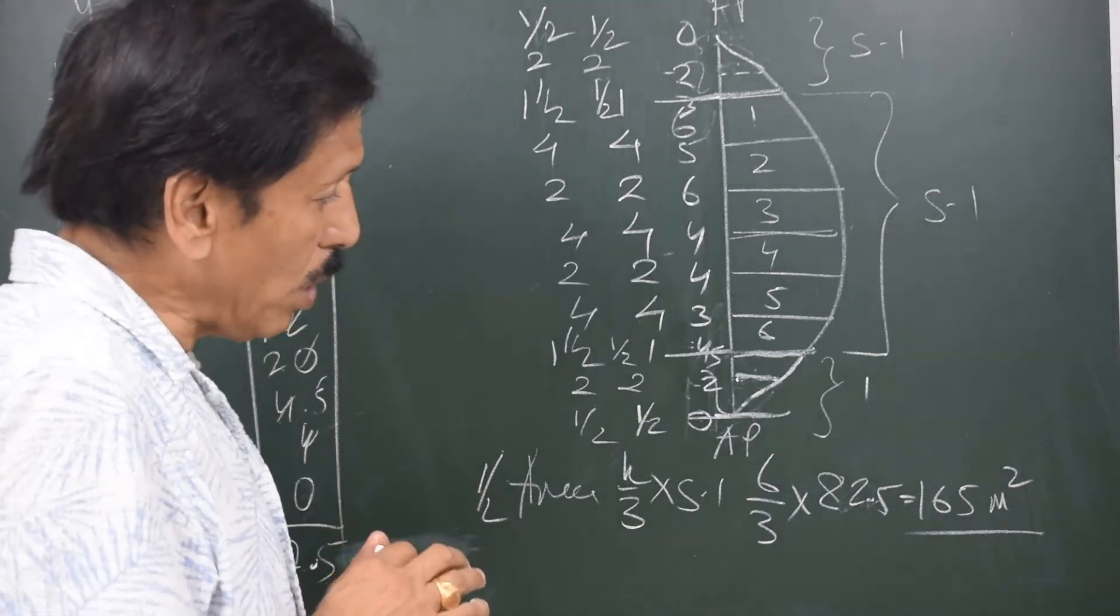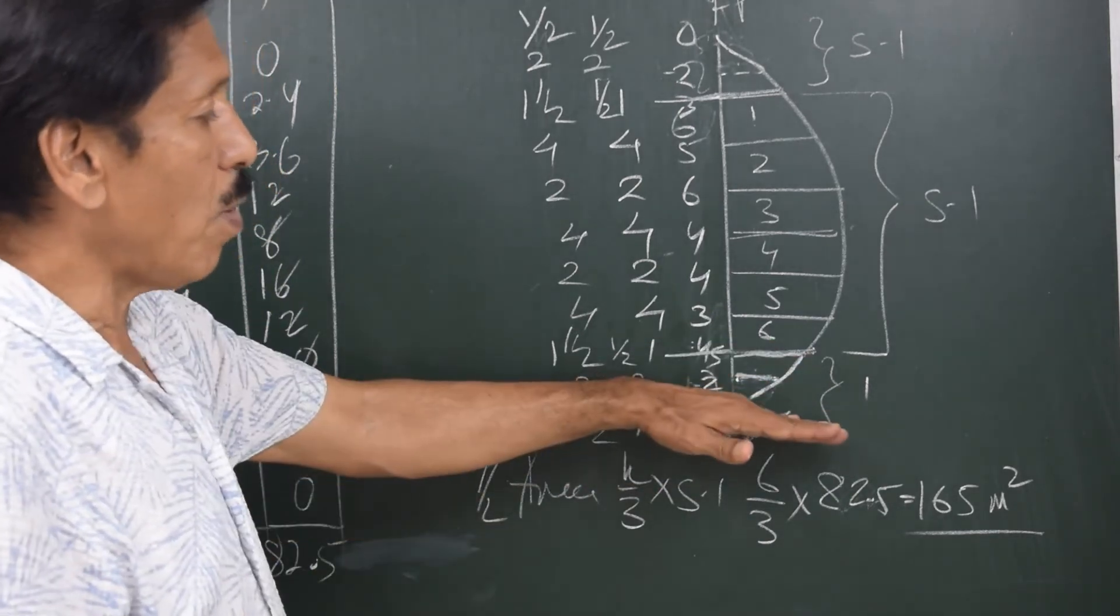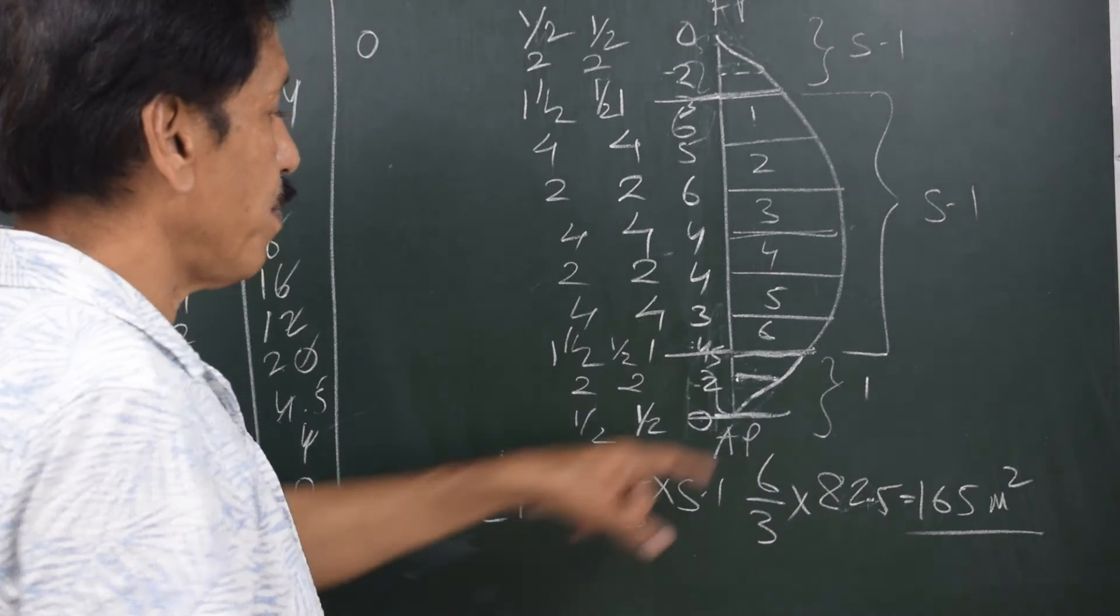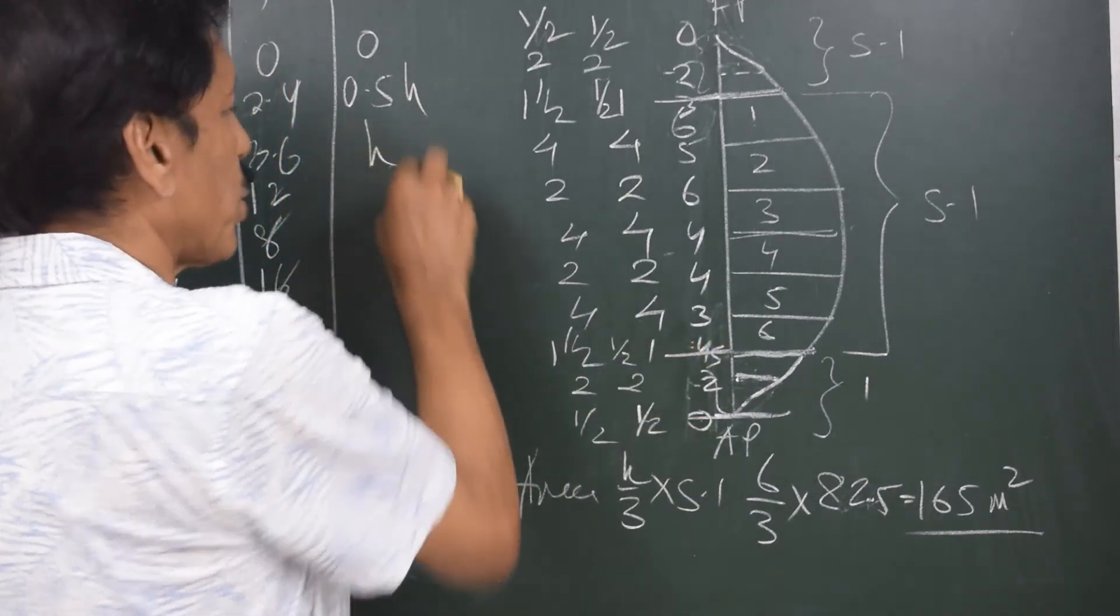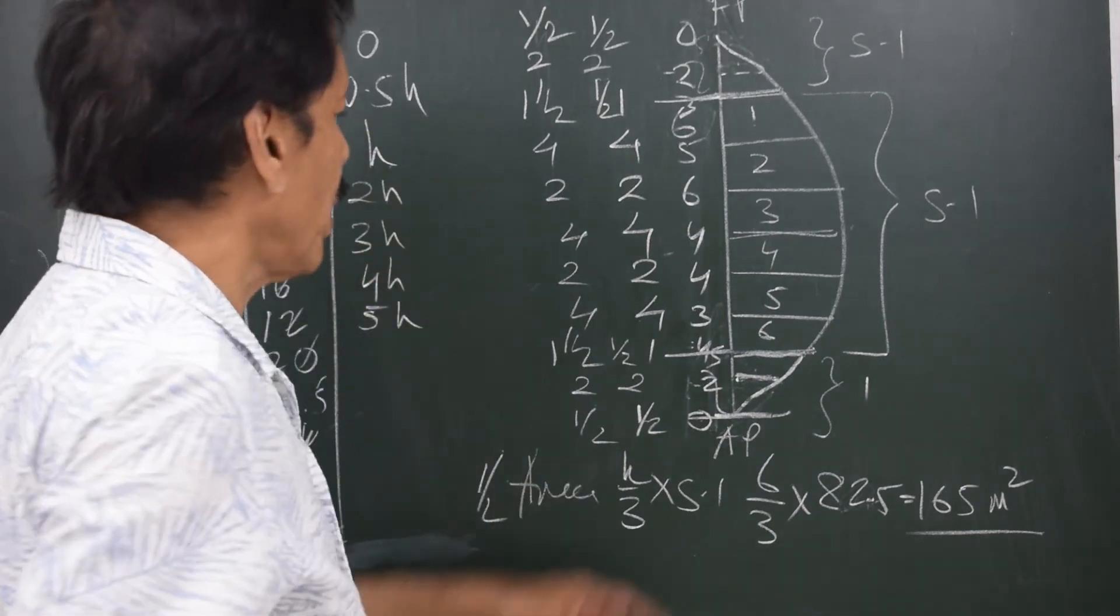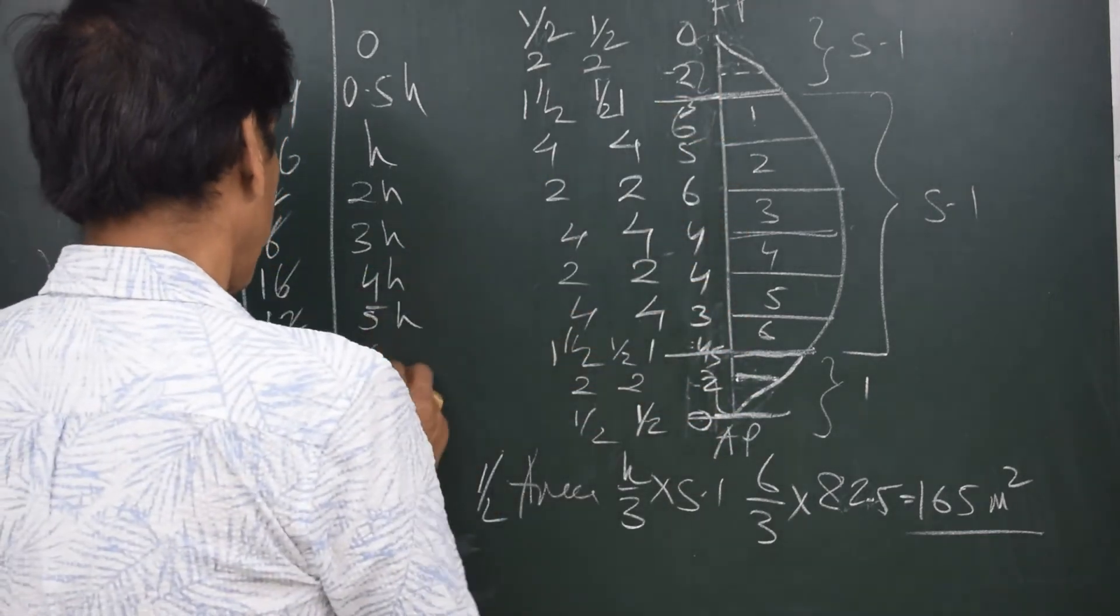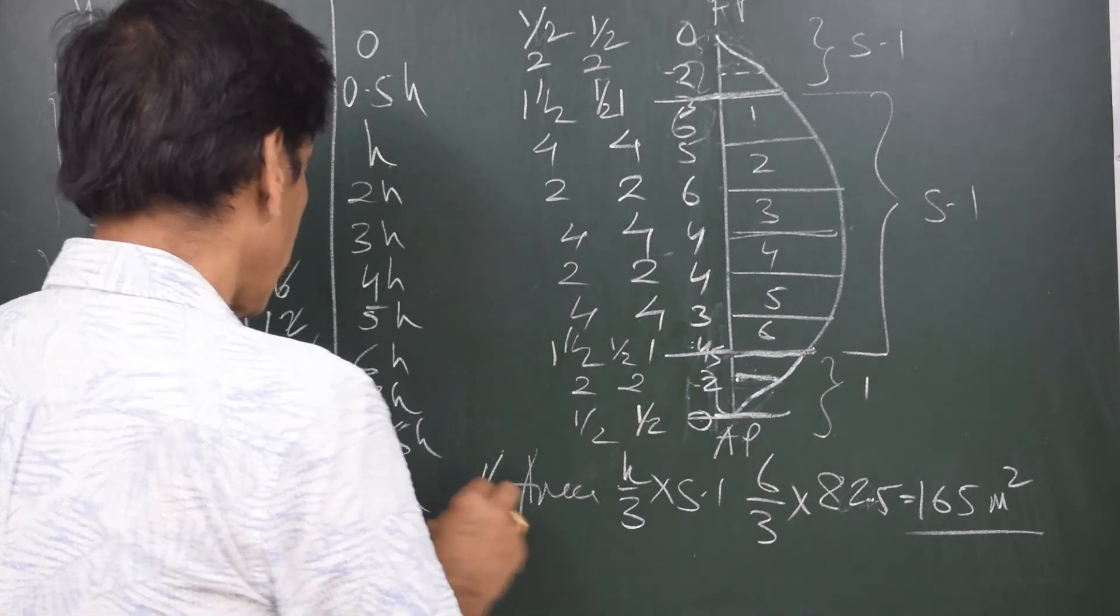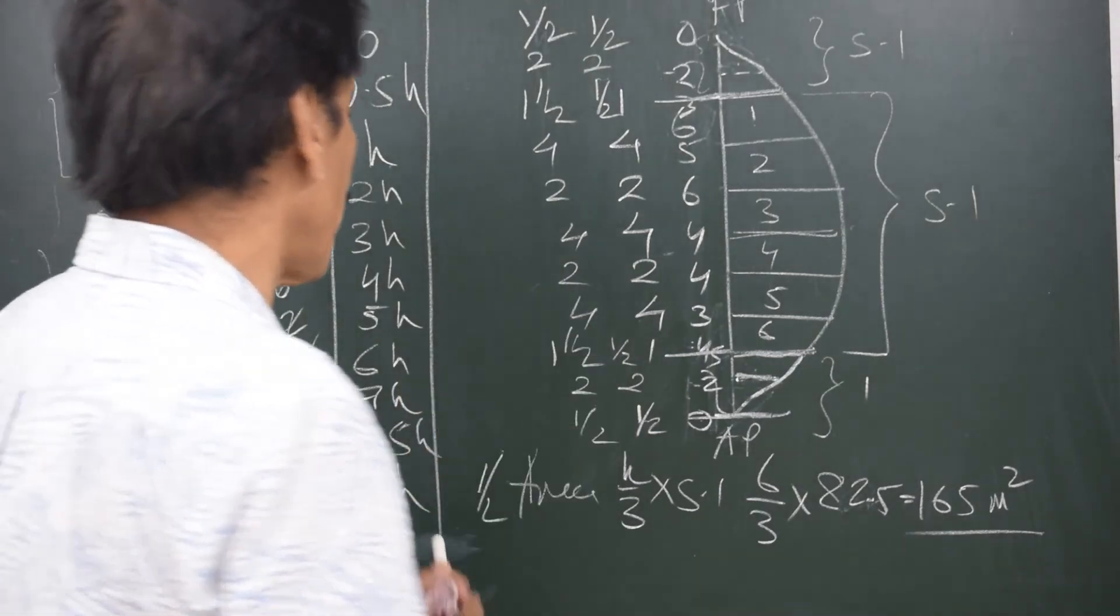Now to write down the lever, the only precaution is whatever is the actual distance from the reference axis, you take that distance. So from aft perpendicular, what is the distance of the first ordinate? Zero. What is the distance of this particular ordinate, the intermediate ordinate? So can I say 0.5H? And this particular ordinate is H. The next ordinate is 2H, 3H, 4H, 5H. So this one was H, 2H, 3H, 4H, 5H, 6H, 7H. But after that it is 7.5H and then it is 8H. What I have done is, as far as the lever is concerned, I have written down the actual distance from the first ordinate.